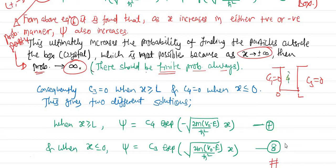Now we have three different solutions: equation 4 is the solution inside the box, equation 8 is the solution for x ≤ 0 (where C₄ = 0), and equation 7 is the solution for x ≥ L (where C₃ = 0). So we have three different positions and three different solutions — equations 4, 7, and 8 — and now we can apply the boundary conditions.